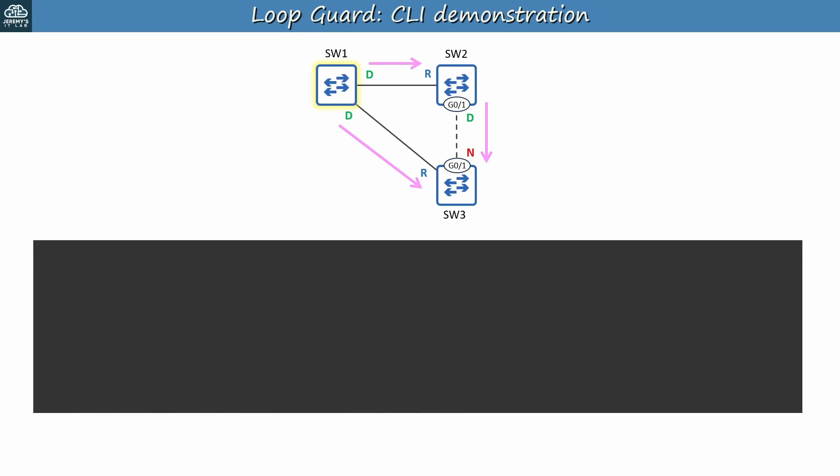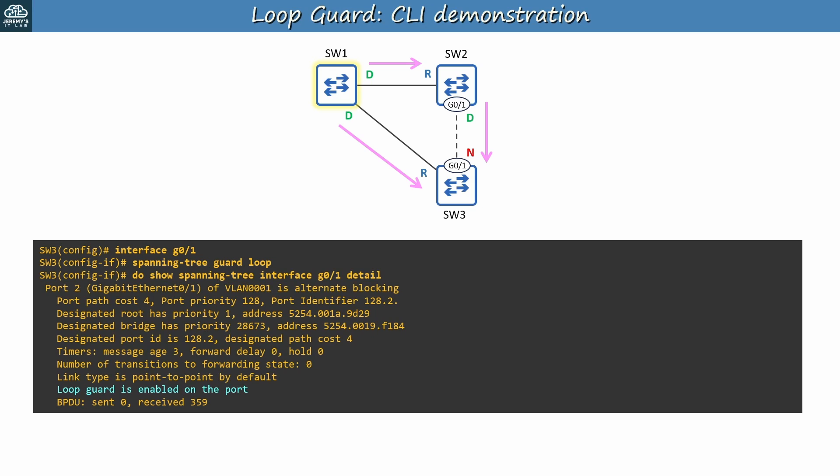Let's take a look at Loop Guard in the CLI. I enabled Loop Guard on SW3's G0-1 port with 'spanning tree guard loop'. In the output of 'show spanning tree interface detail' it says Loop Guard is enabled on the port. It just takes that one command to enable Loop Guard on a port.